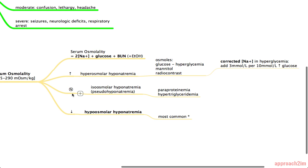Next you have a normal serum osmolality and that's also known as isoosmolar hyponatremia. And the possibilities in this case are periproteinemia and hypertriglyceridemia. And last we have a low serum osmolality and this is again the most likely possibility and this is the one you really need to know.